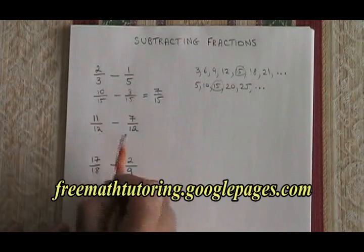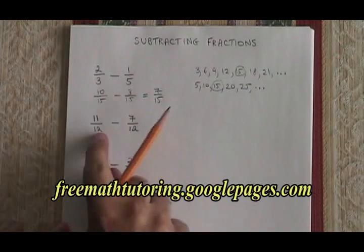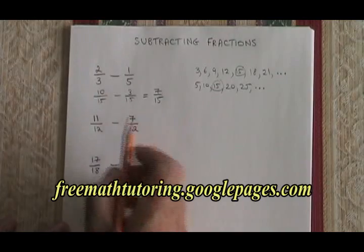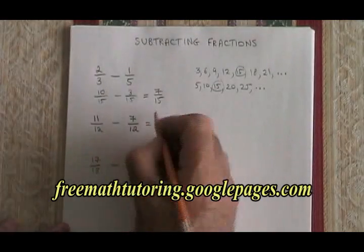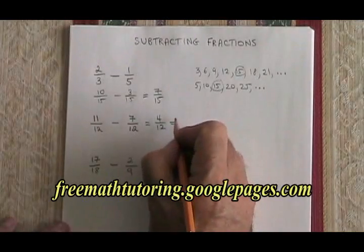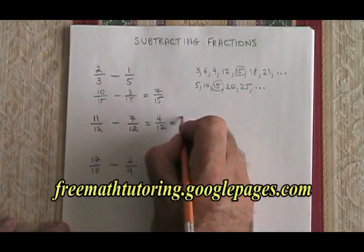Here we have 11 twelfths minus 7 twelfths. Well, our denominator happens to already be common. So we have a really easy one here. We can just answer the question. 11 minus 7 is 4. Our answer is 4 twelfths, which reduces if I divide top and bottom by 4 into 1 third.